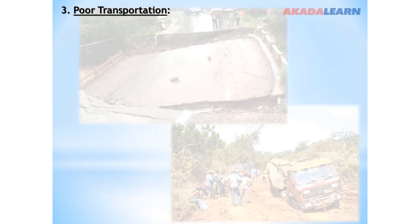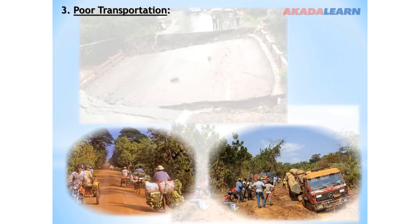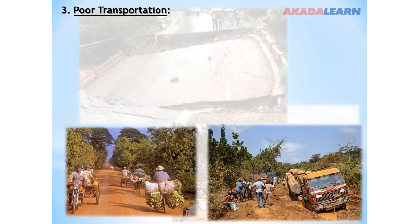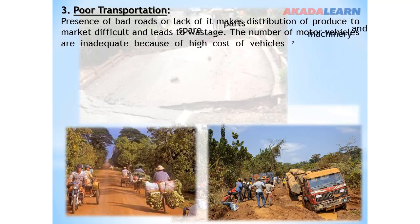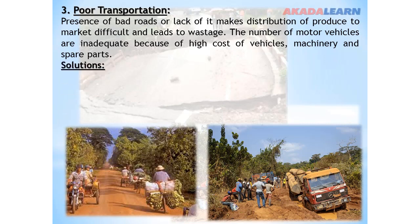Problem number three: Poor transportation. The presence of bad roads or lack of roads makes distribution of produce to market difficult and leads to wastage. The number of motor vehicles is inadequate because of the high cost of vehicles, machinery, and spare parts.